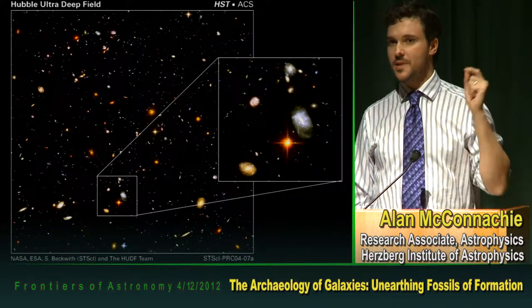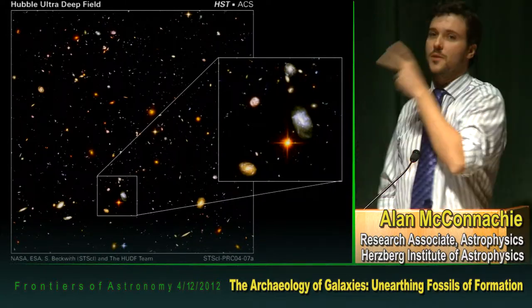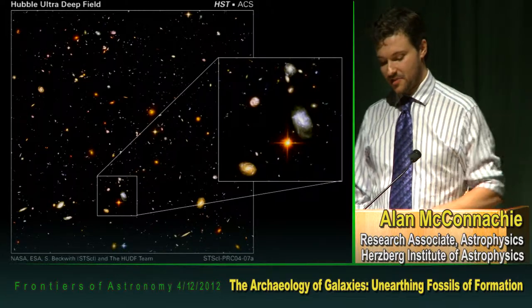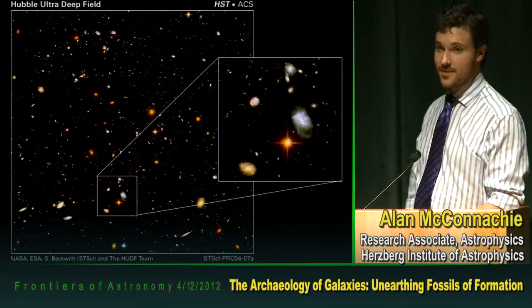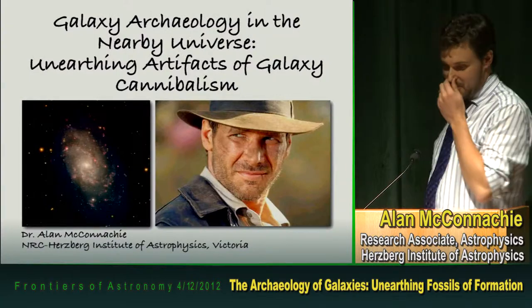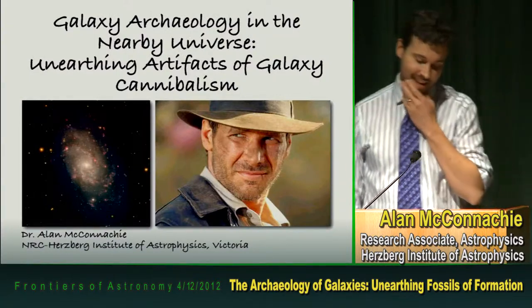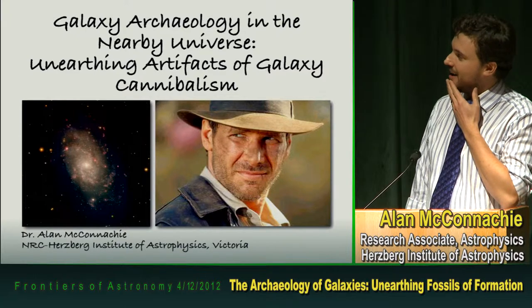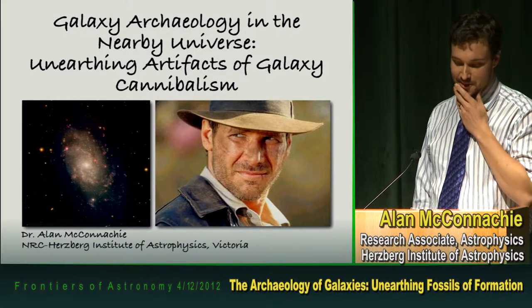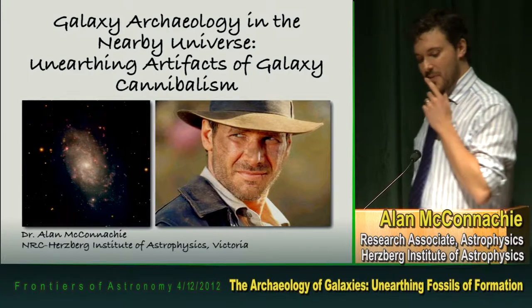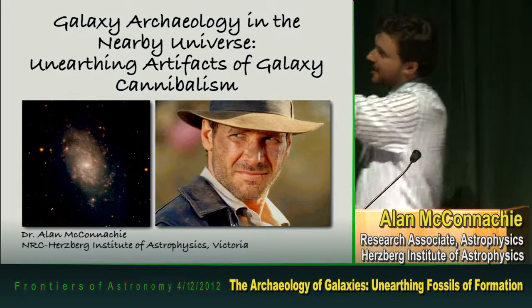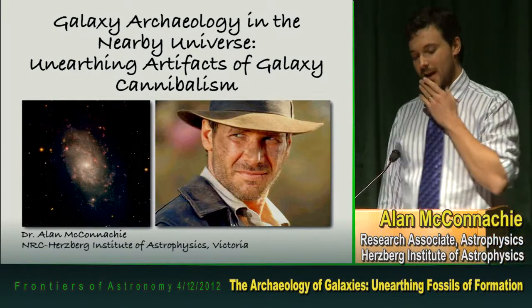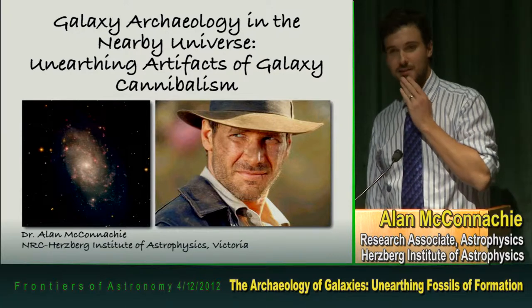This is a form of archaeology — we're essentially looking at things as they are now, with clues as to how the Milky Way was put together. For distant galaxies, we can't see the stars individually; we just see the total light they emit. But to get the really detailed view, you want to analyze stars. The subtitle 'Unearthing Artifacts of Galaxy Cannibalism' will be made clear later on.